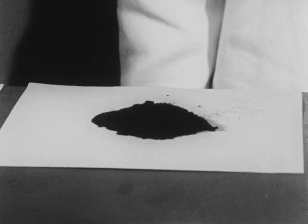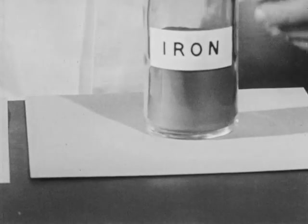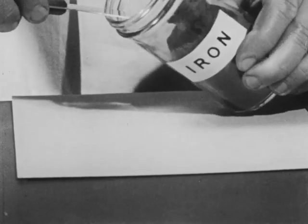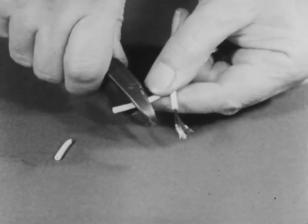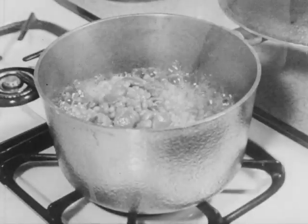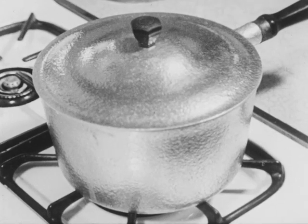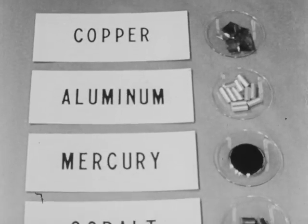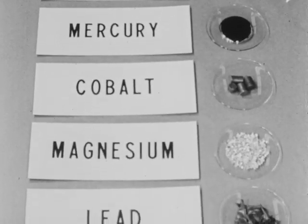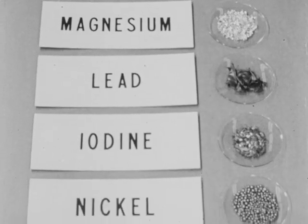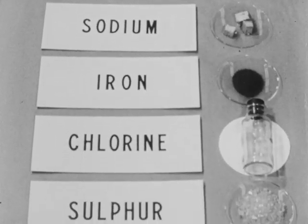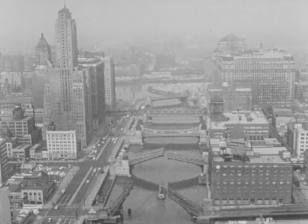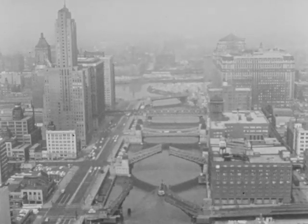Sulfur is an element. Carbon is also an element. This is powdered iron. Iron is an element. Let's look at some more common elements. Most of our electrical wires are made from copper. Copper is a common element. This pot is made of aluminum, another common element. Altogether, more than 100 elements have been discovered. Remember that each element is matter in which all the atoms are alike. In other words, there are more than 100 different kinds of atoms.